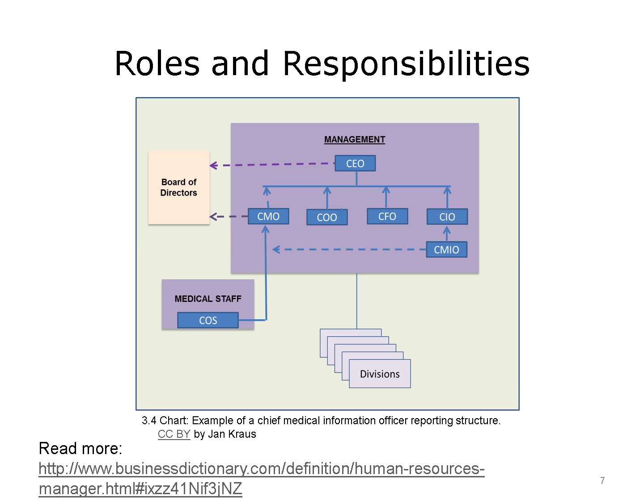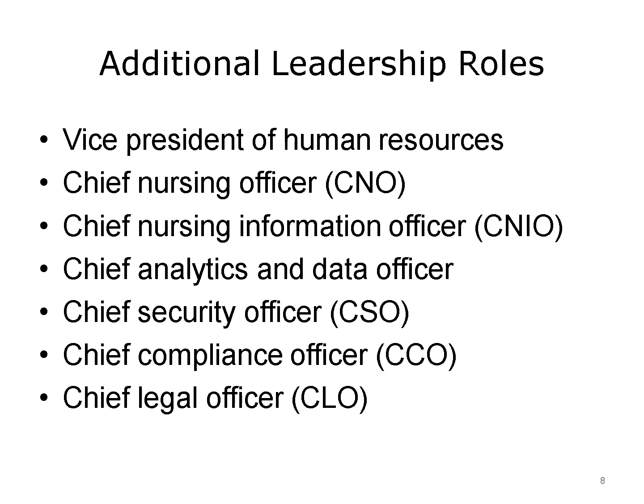Other executive leadership roles commonly report to the CEO, but are not depicted in the example organizational chart. The Vice President of Human Resources typically reports to the CEO and is responsible for overall processes and procedures for hiring new employees, supervising employee evaluations, management of employee benefits, mediation between employees and supervisors as necessary, and general oversight of the personnel department. The Chief Nursing Officer, or CNO, typically a master's prepared registered nurse, is responsible for the nursing staff providing direct patient care. In some organizations, the CNO may be responsible for other patient care departments, such as surgery and the emergency department, as well as non-patient care departments, such as patient case management and social services.